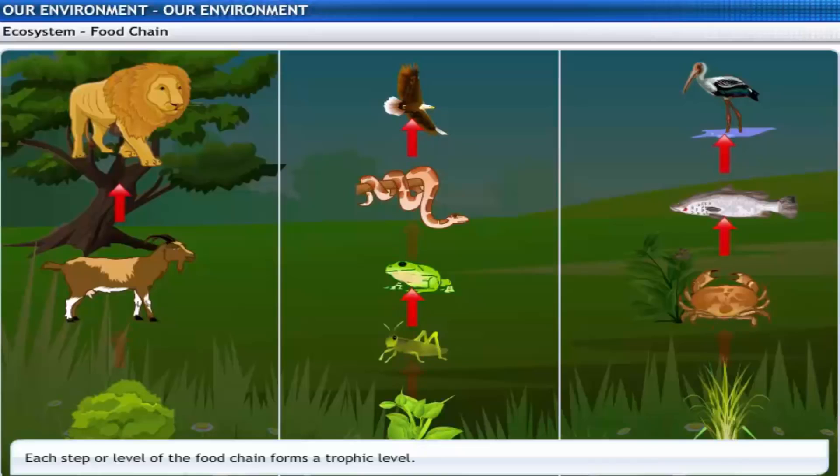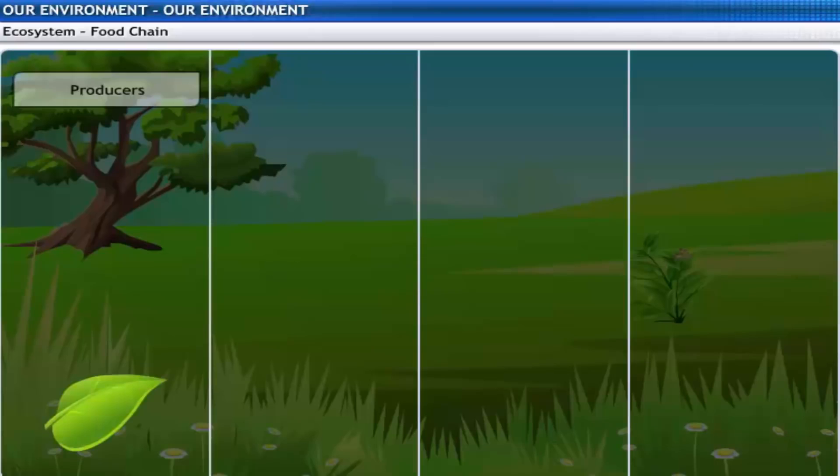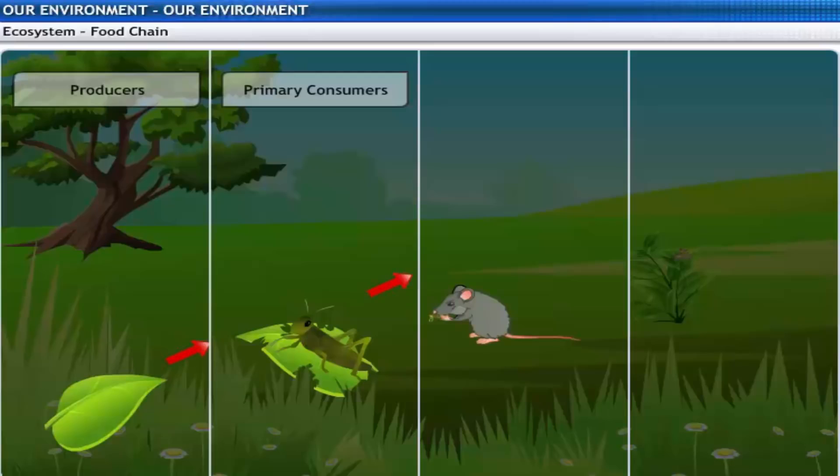Each step or level of the food chain forms a trophic level. Trophic levels are categorized as per their feeding behavior. The autotrophs or the producers, that is the plants, are at the first trophic level. The herbivores or the primary consumers like bees and insects come at the second level. Small carnivores like rats and snakes, or secondary consumers, come at the third level.